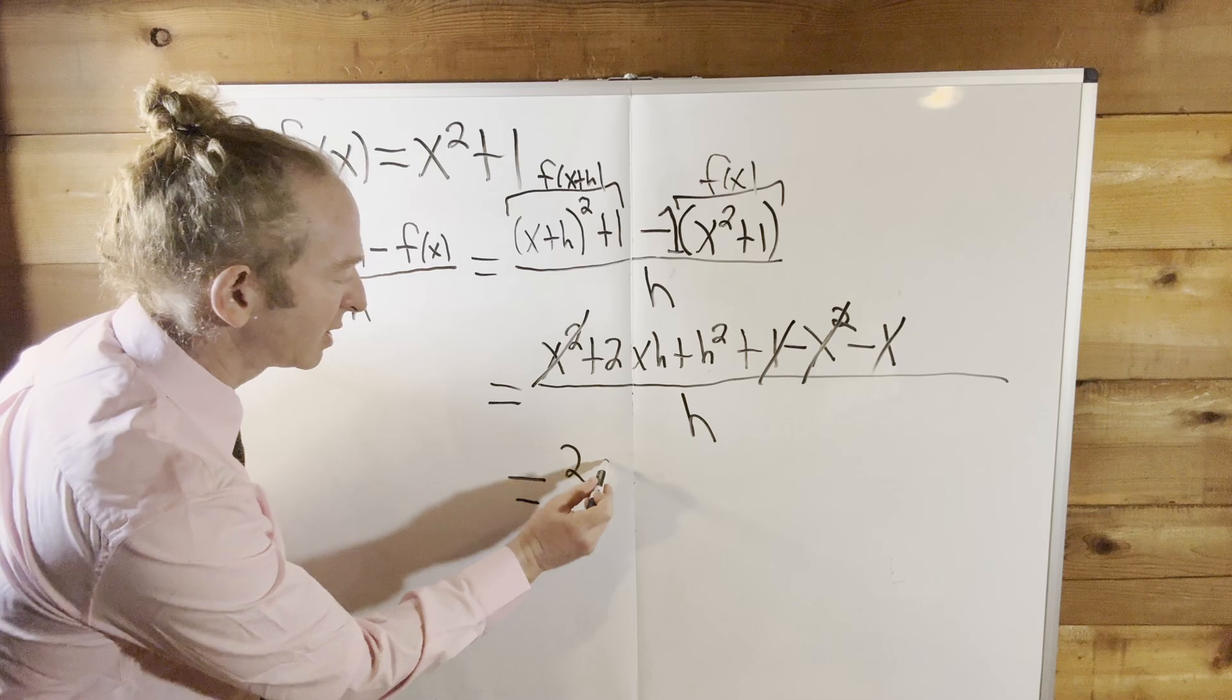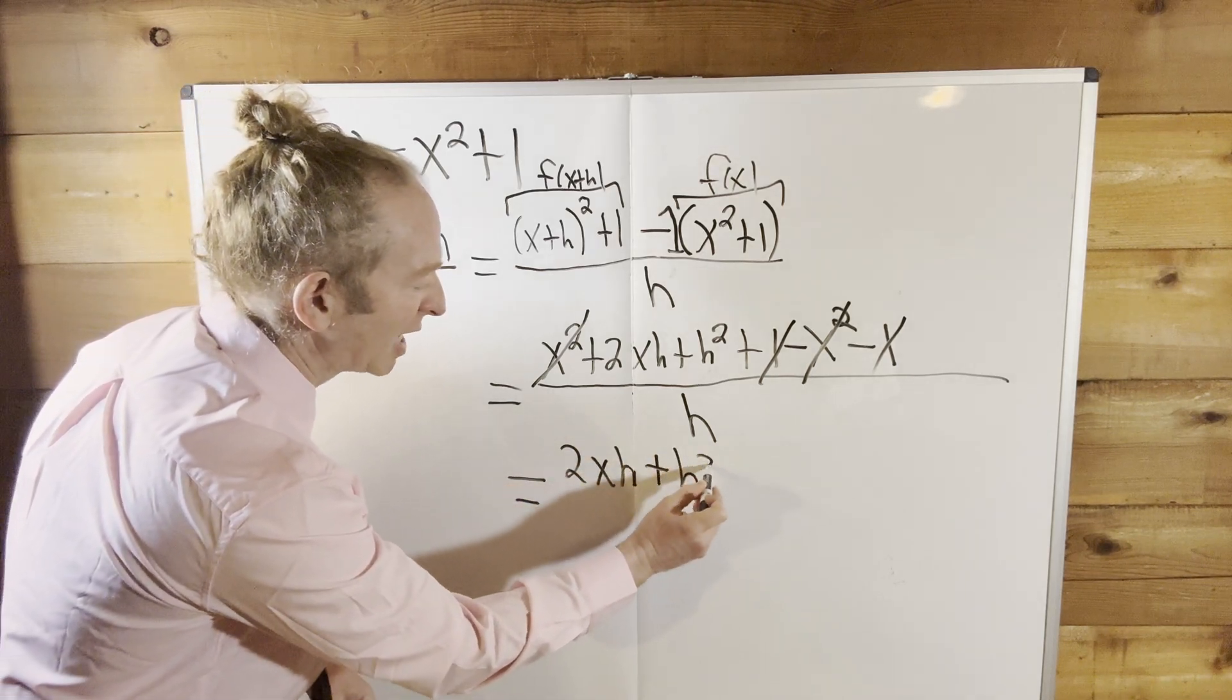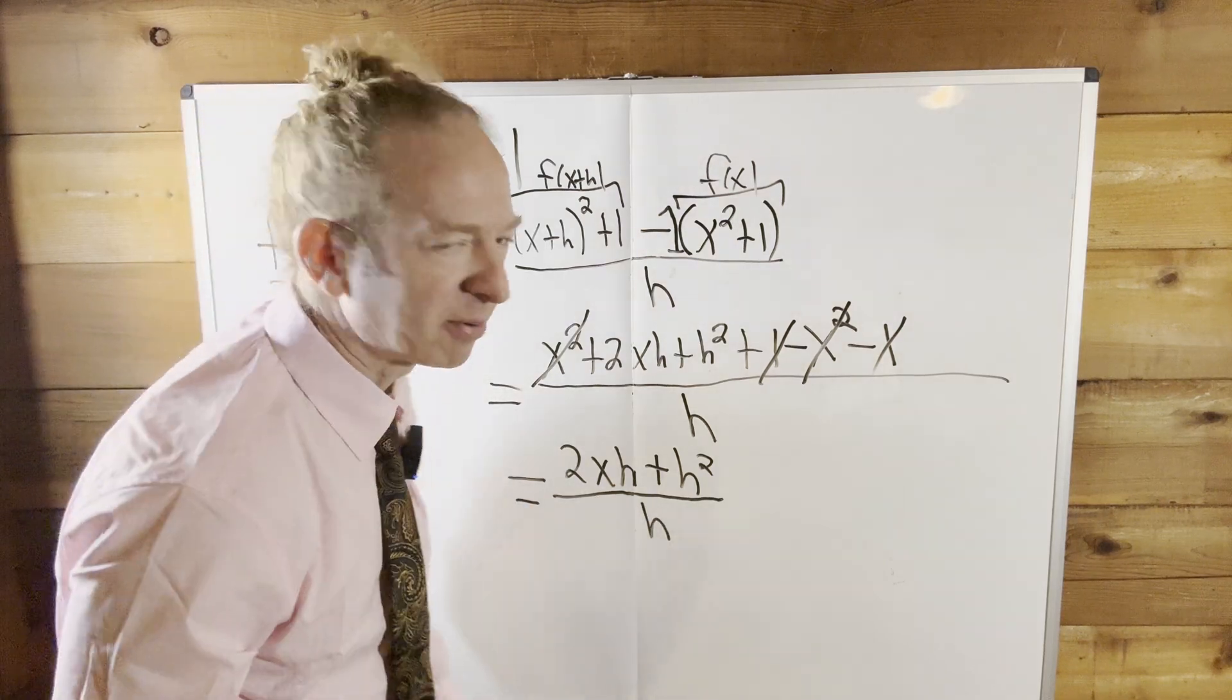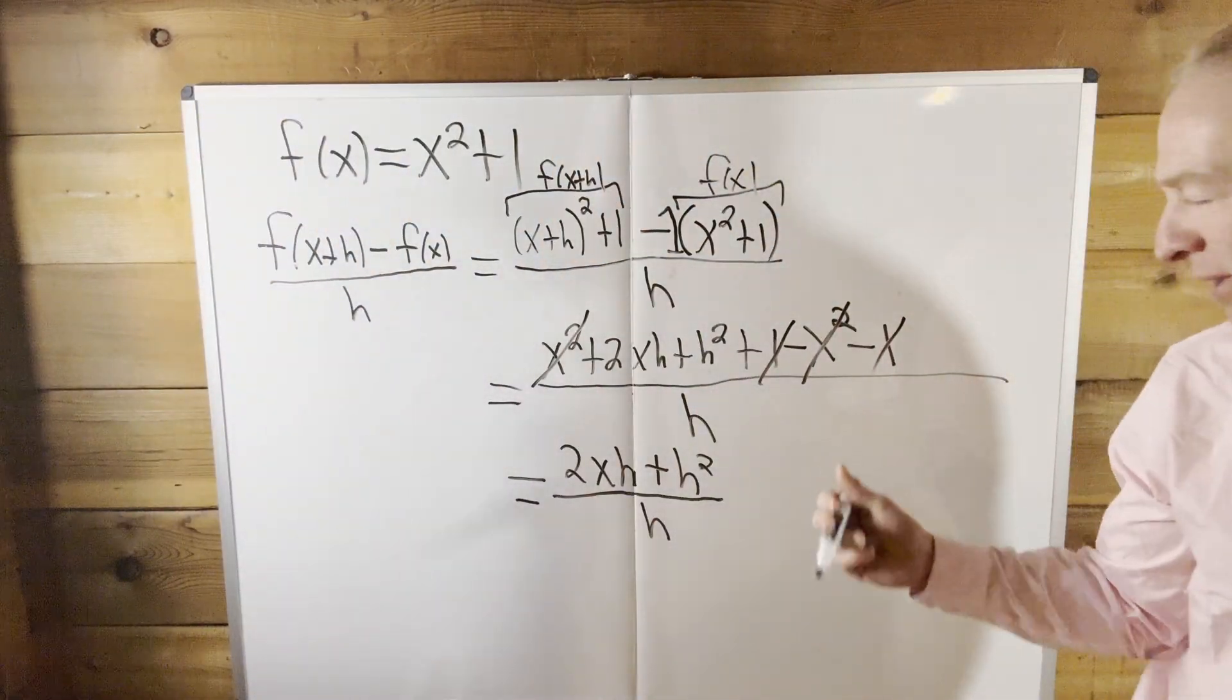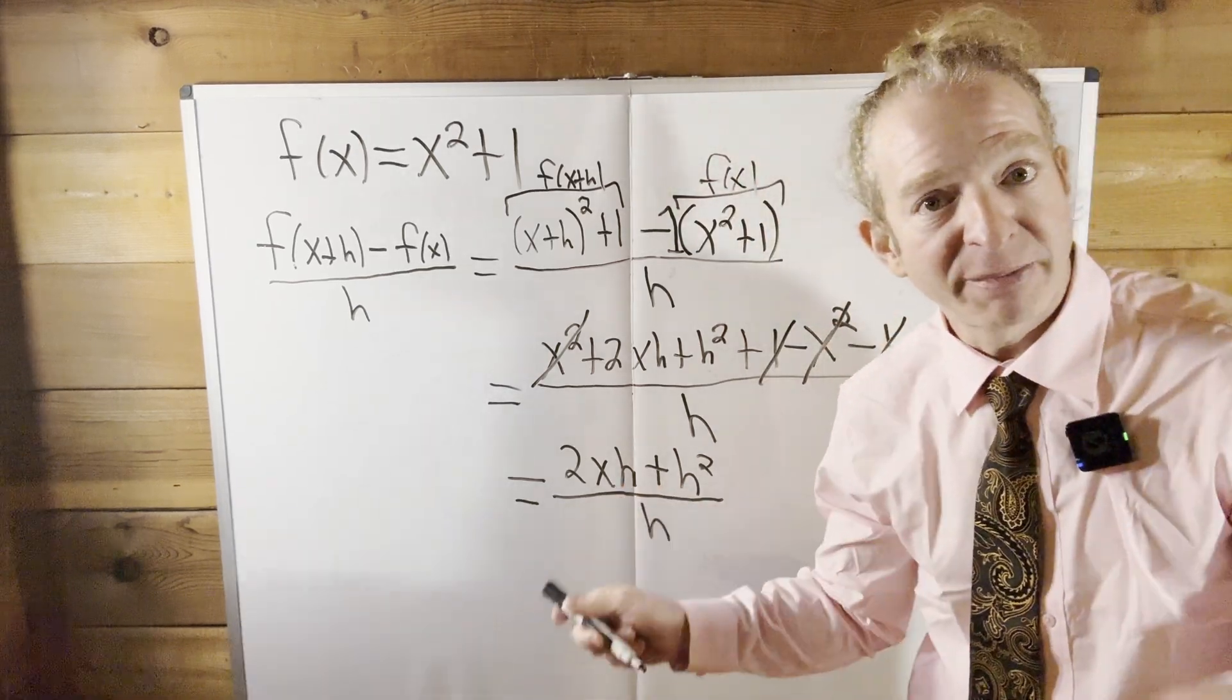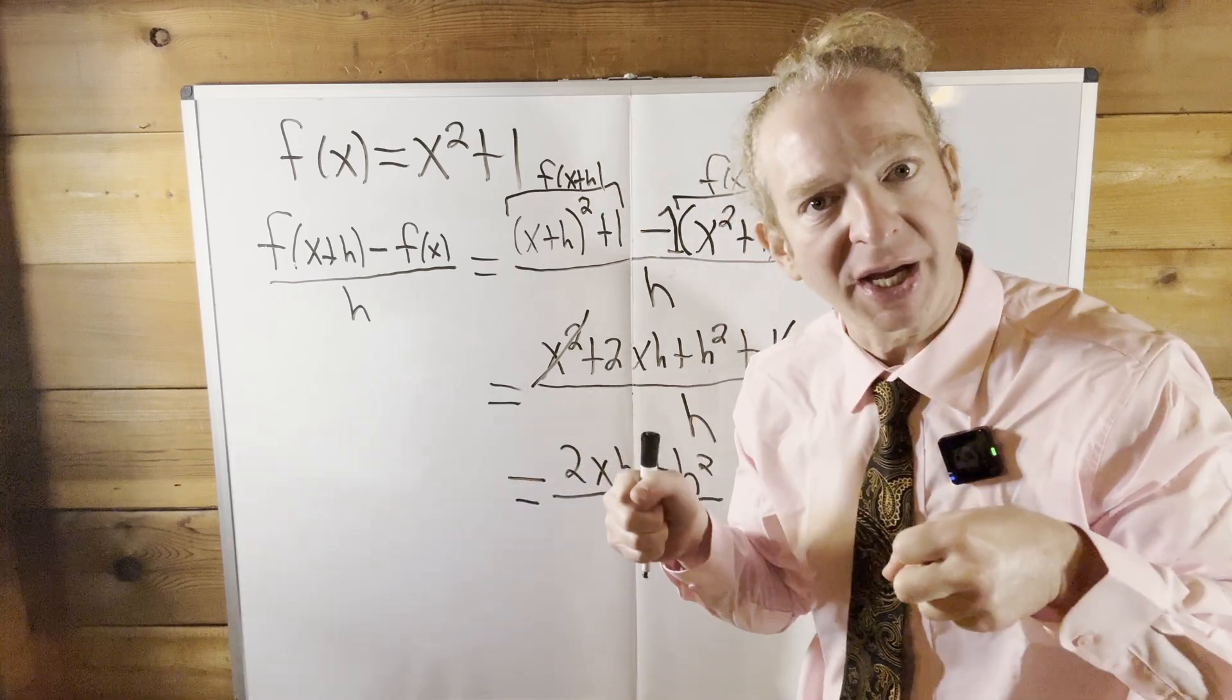So this is 2xh plus h. And I apologize about the lighting. I don't know if you can see the stuff on the board correctly. This is a new setup. I've had this board for a while, and I just thought, let me use it. It's kind of fun. We need to get rid of this h. We need to simplify.